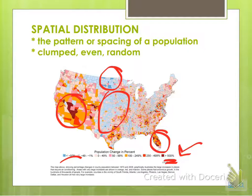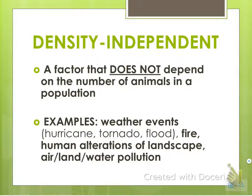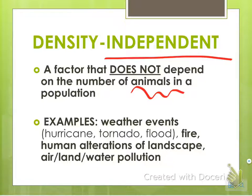You need to be able to look at something and figure out how everything is distributed. There are two categories of limiting factors: density independent and density dependent. Density independent factors do not depend on the number of animals — they impact an area regardless of how many animals live there. Examples include weather events like hurricanes, tornadoes, floods, fire, human alterations, and pollution.